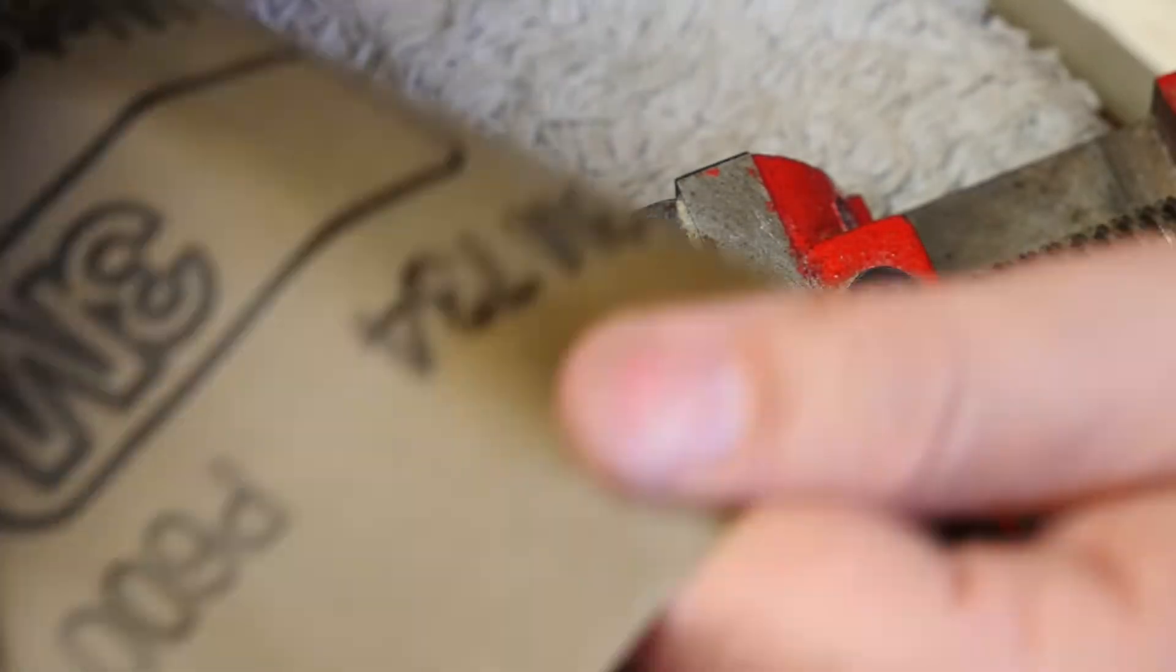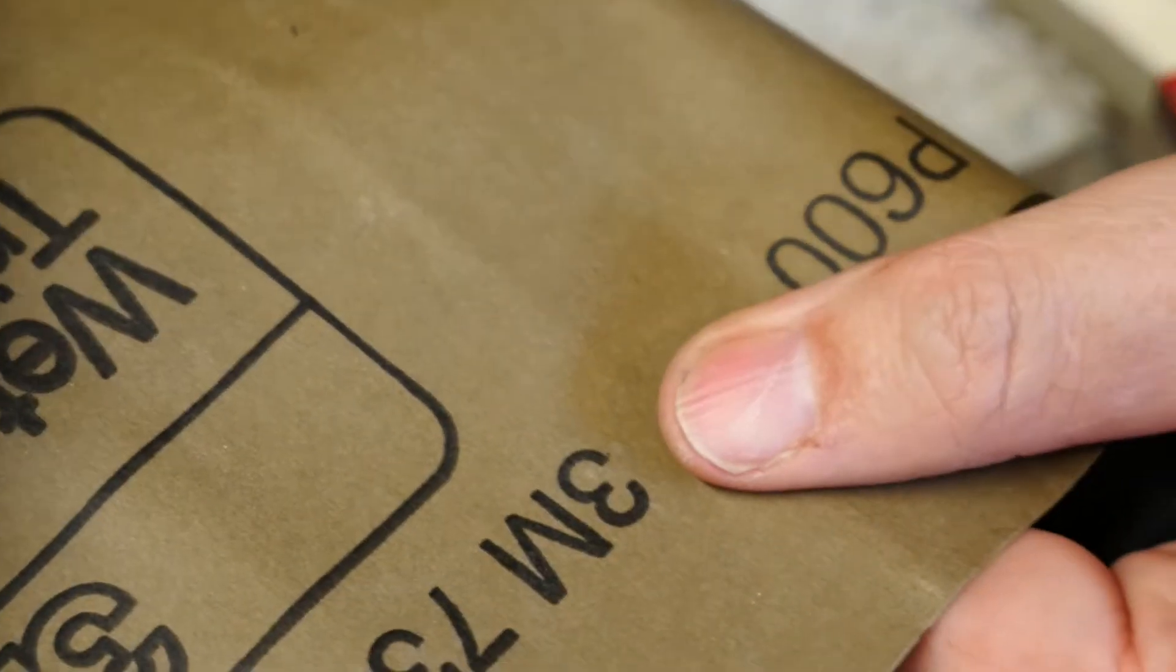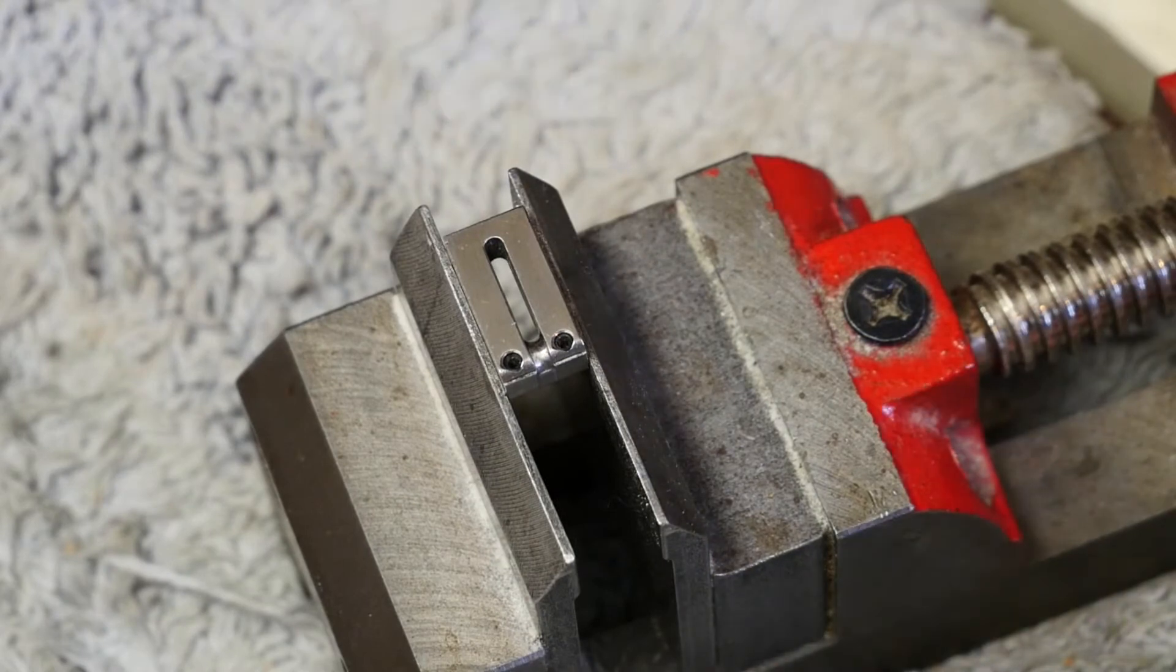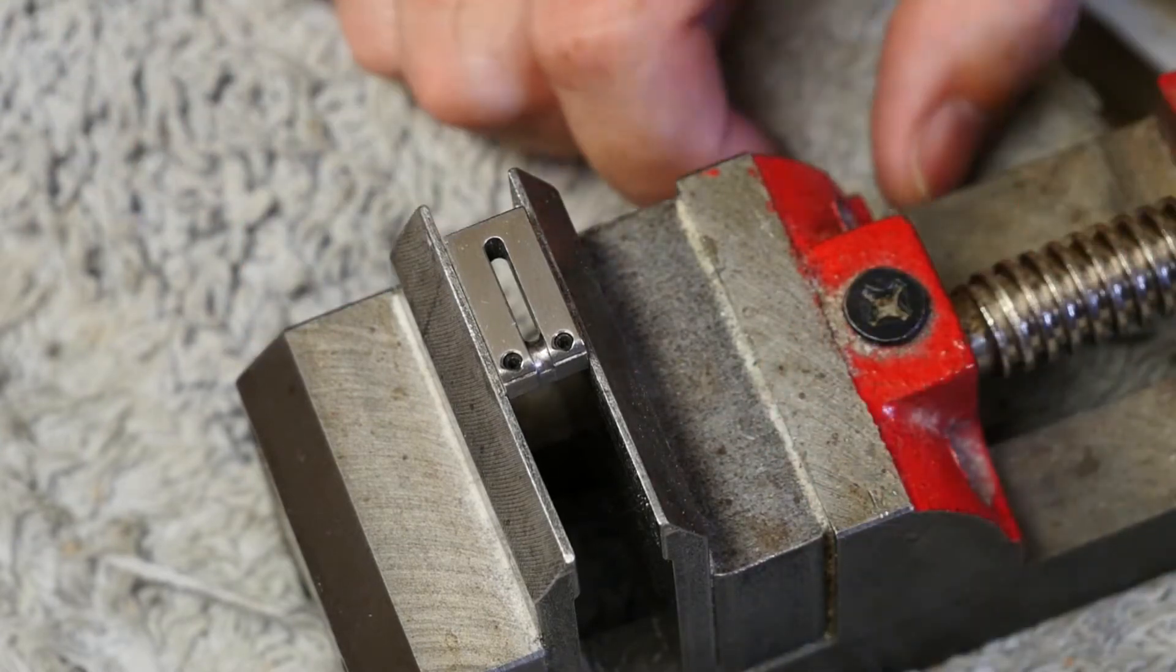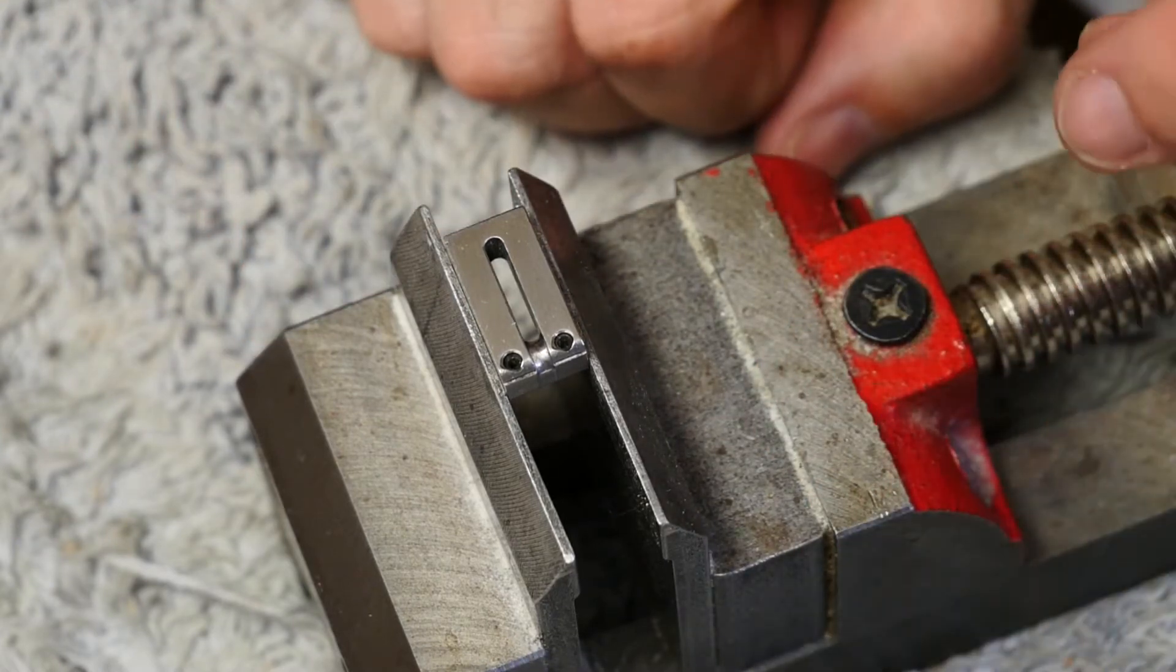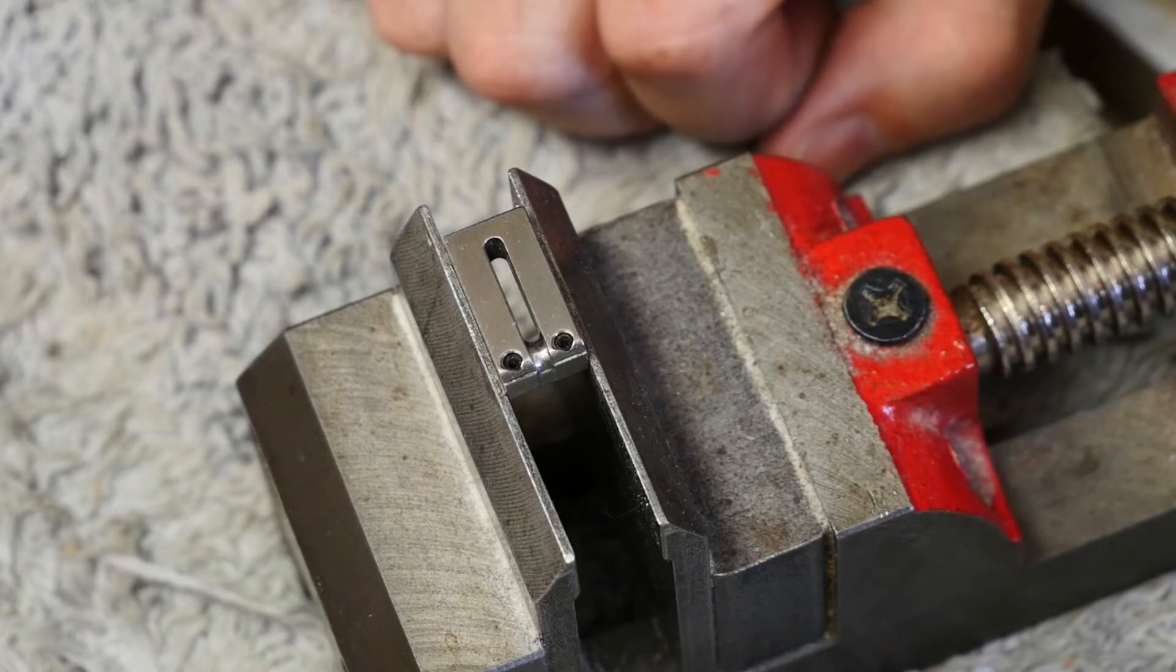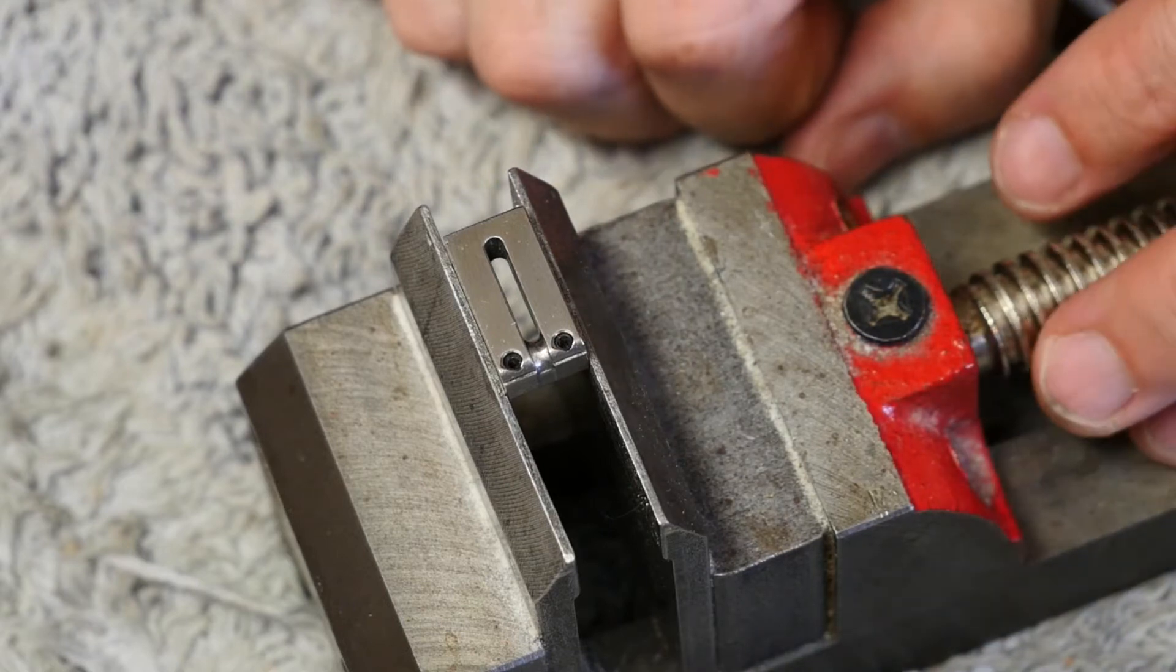Now I'm going to do this with 600, which is this stuff here, 600 standard wet and dry. And then I'm going to do it with 1200 to polish it, and then with 2000 to put even finer polish on it. What we're going to try and do is remove as much friction from the bridge saddles as possible to reduce any chance of the strings getting snagged up and snapping.